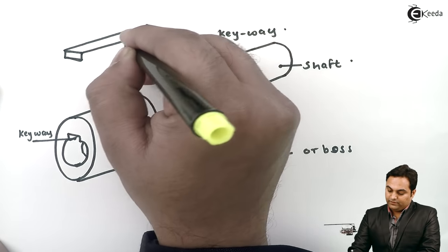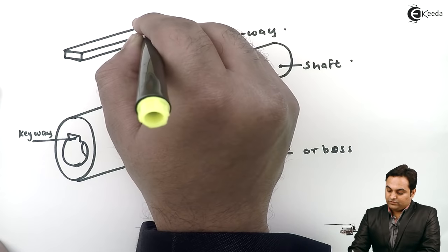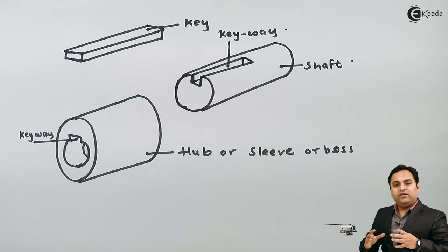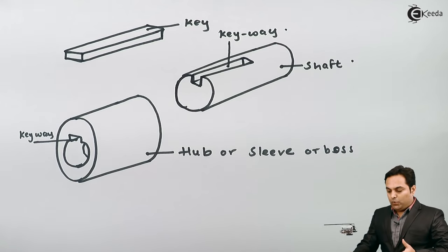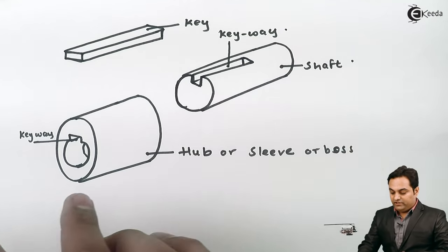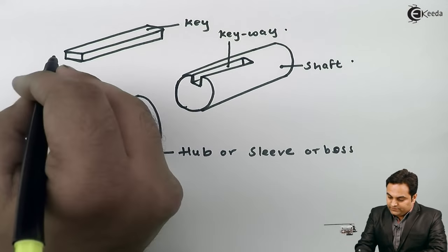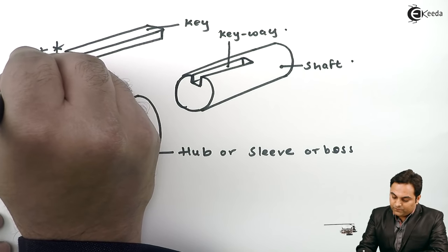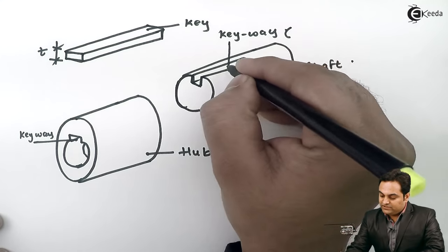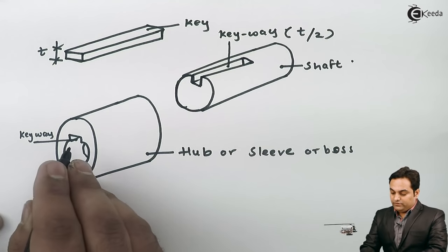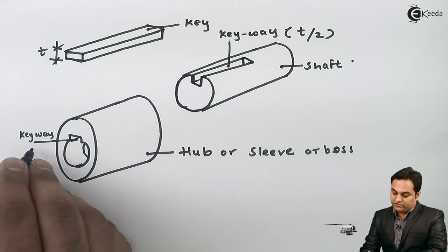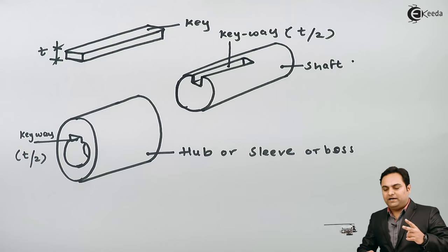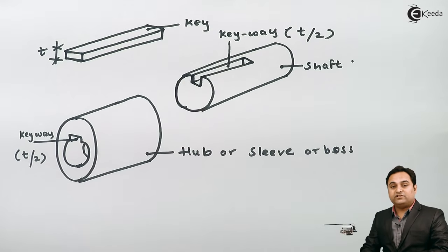Here I am drawing this member and it is called a key. Now, how does the connection take place? I will put this shaft inside the hub. The key has a thickness of small t, so half the thickness — that is t/2 — is in the shaft keyway, and the other t/2 is in the boss keyway.